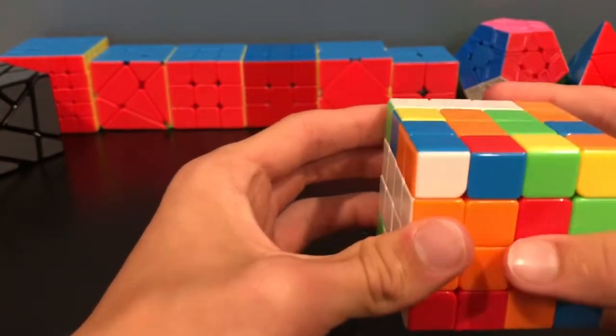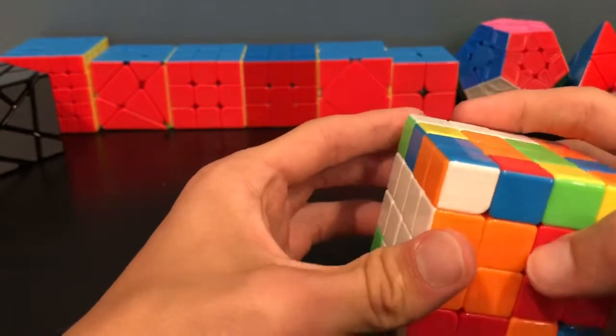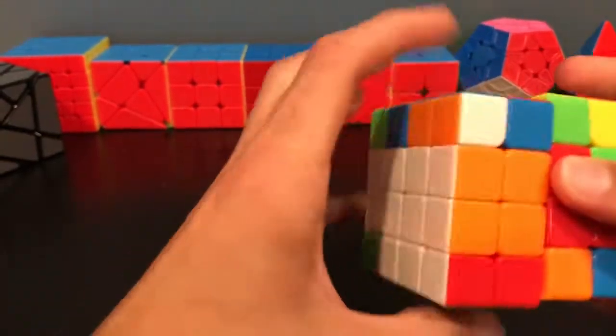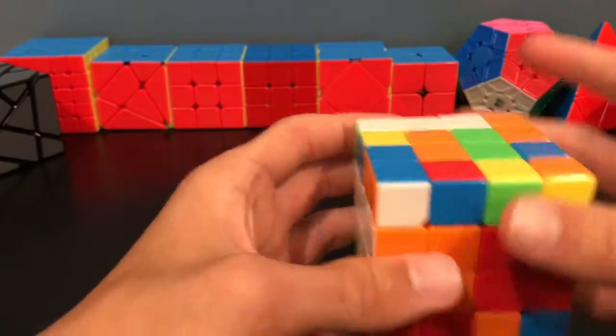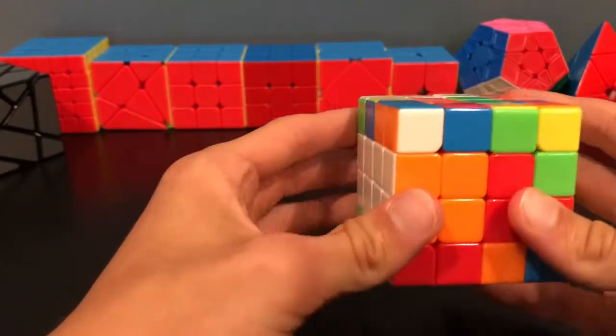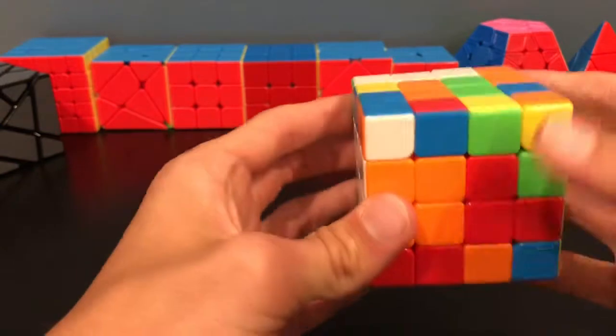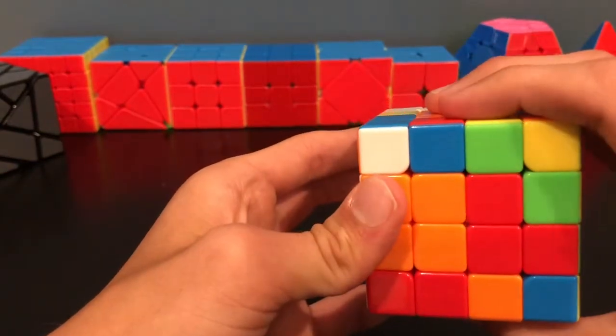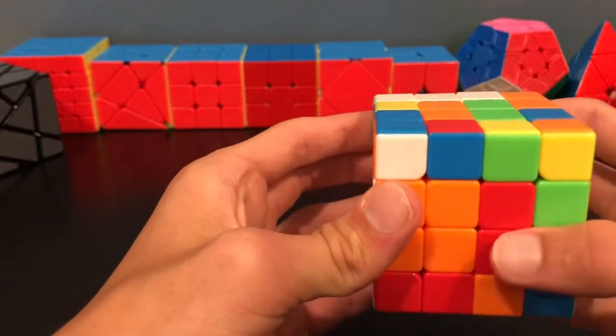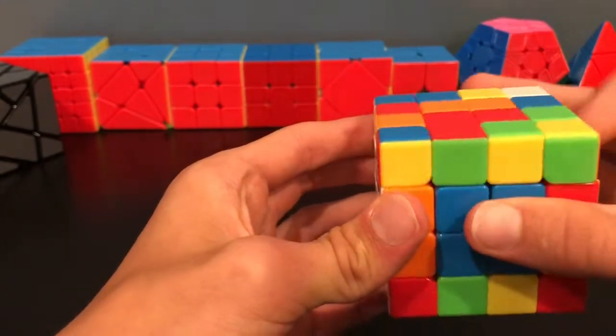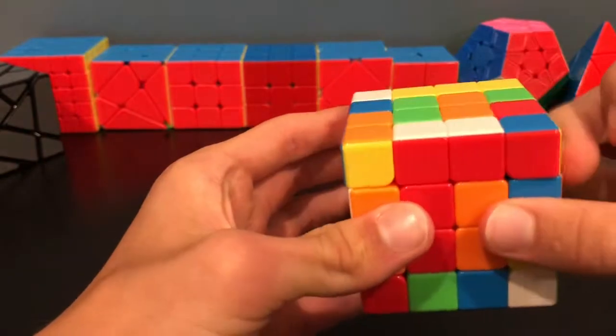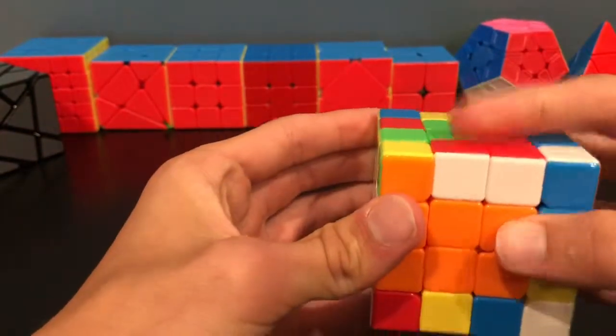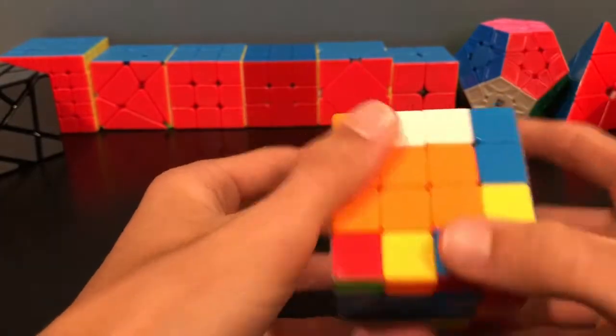Now you have to remember, it'll be really easy just to maybe do something like that. But that'll mess up your cross edge. So you have to think in Yao and think, how do I get this orange bar down here without messing up any of my centers. So you can go like this, then there we go. Now we've built our orange center.